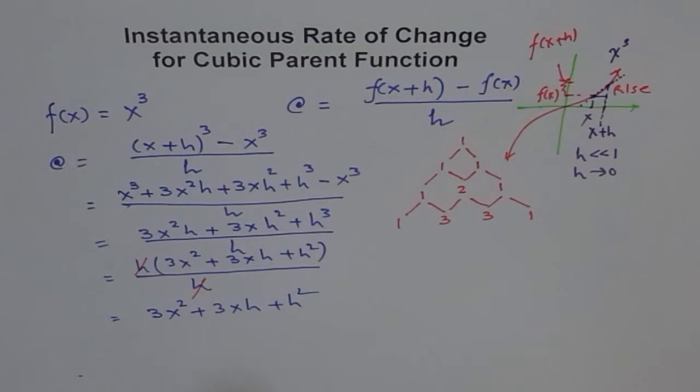Let's say you want to find instantaneous rate of change at x = 1. You can plug in 1 for x and 0.001 for h and calculate the value, which will be approximated to 3 decimal places.